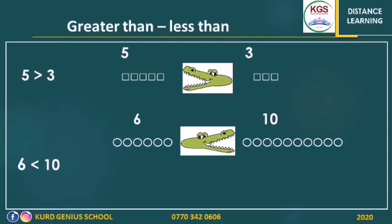Now, look at these two examples. Here we have a group of five, and on the right side we have a three. The alligator wants to eat five. Why? Because five is greater than three. He doesn't want to eat three — he wants to eat five. So we will start from the left and say: five is greater than three.